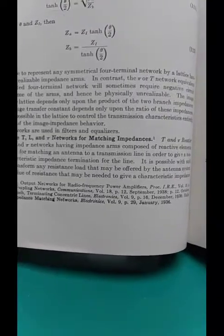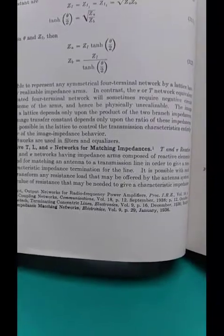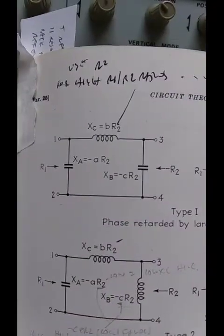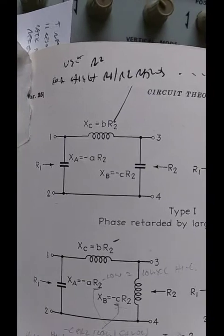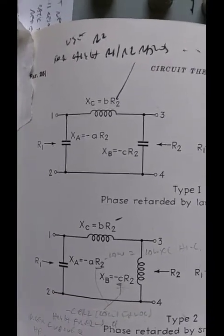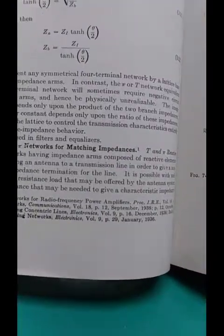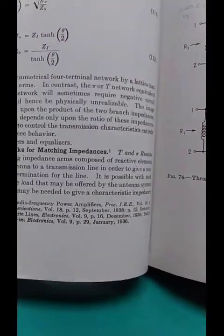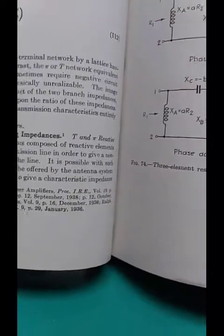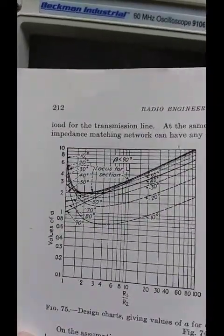Remember from video four. Resistance only. What I showed you earlier in this video. Pi network matches only resistances on either side. Not a screwed up, cobbled up antenna with a bunch of reactance. You're wasting your time trying to match it. It will not work. To any other value of resistance that may be needed to give the characteristic impedance, which is really characteristic resistance, load for the transmission line.